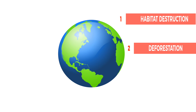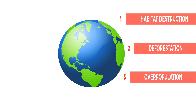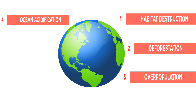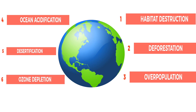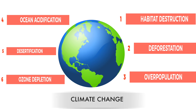We also have the problem of overpopulation of specific species, like Homo sapiens. All other species are on a decline, but humans are always increasing in number, creating an imbalance in nature. To some extent we can also include ocean acidification, which is the ongoing decrease in the pH of Earth's oceans, as well as desertification, ozone depletion, and to cap all these problems, the mother of all problems — climate change.